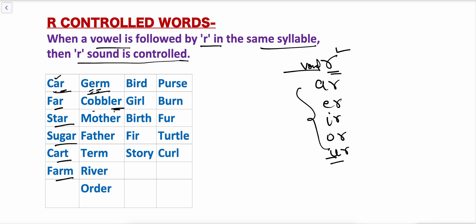Here before R the vowel E is there, so the R sound will be controlled. 'Germ' — E is there before R. So we pronounce it as 'germ.' Also: cobbler, mother, father, term — in all these words E is before R and the R sound is controlled.